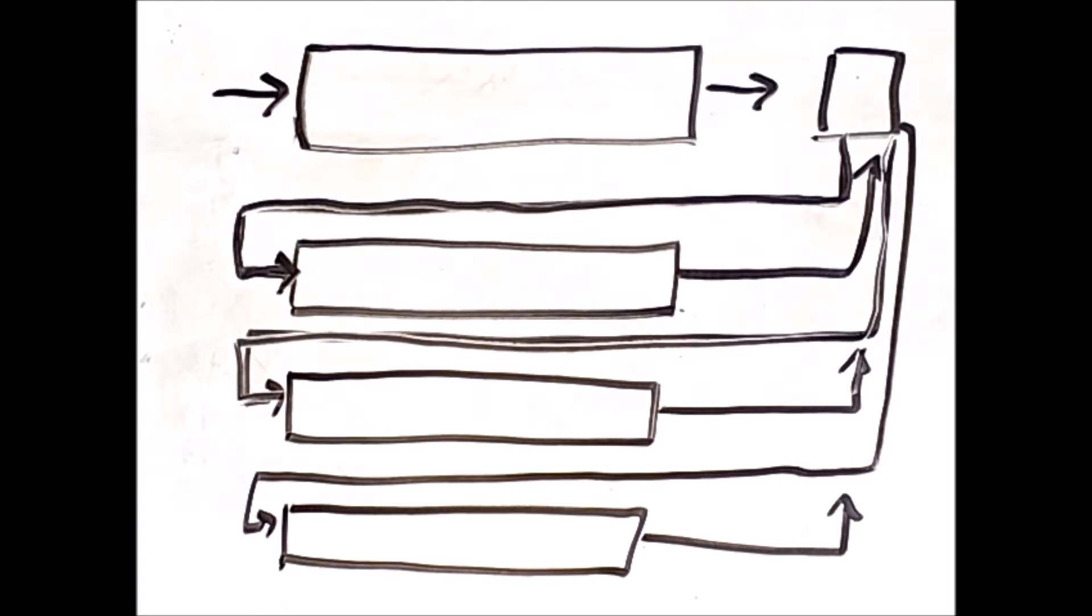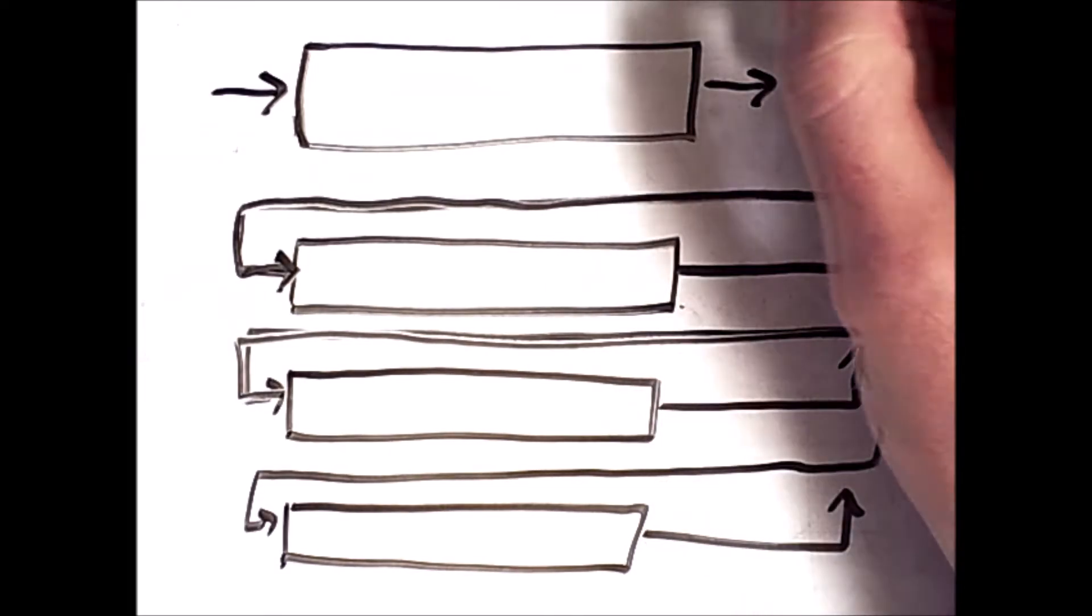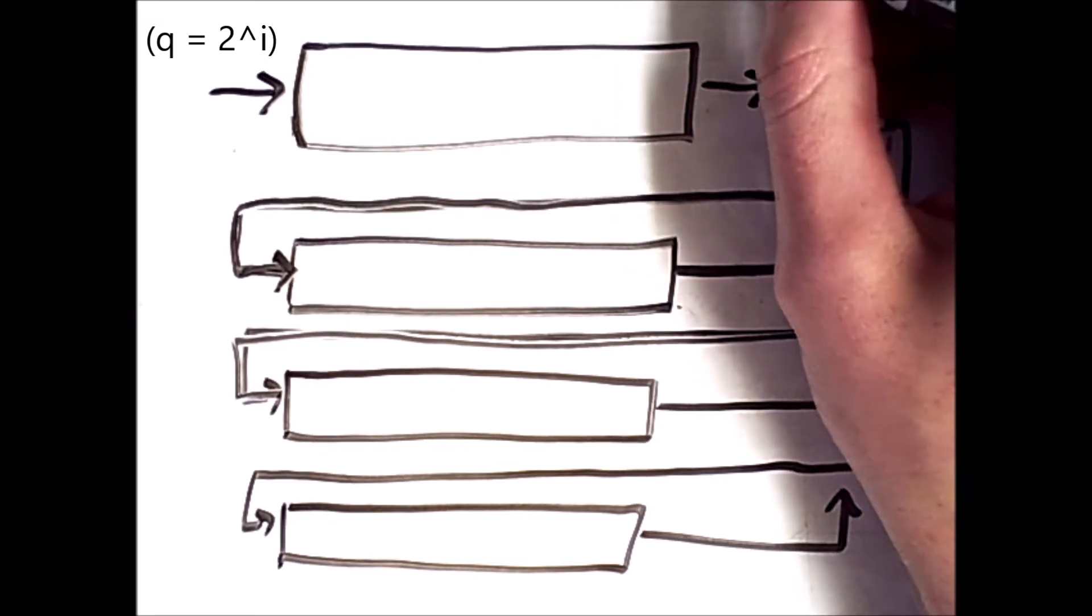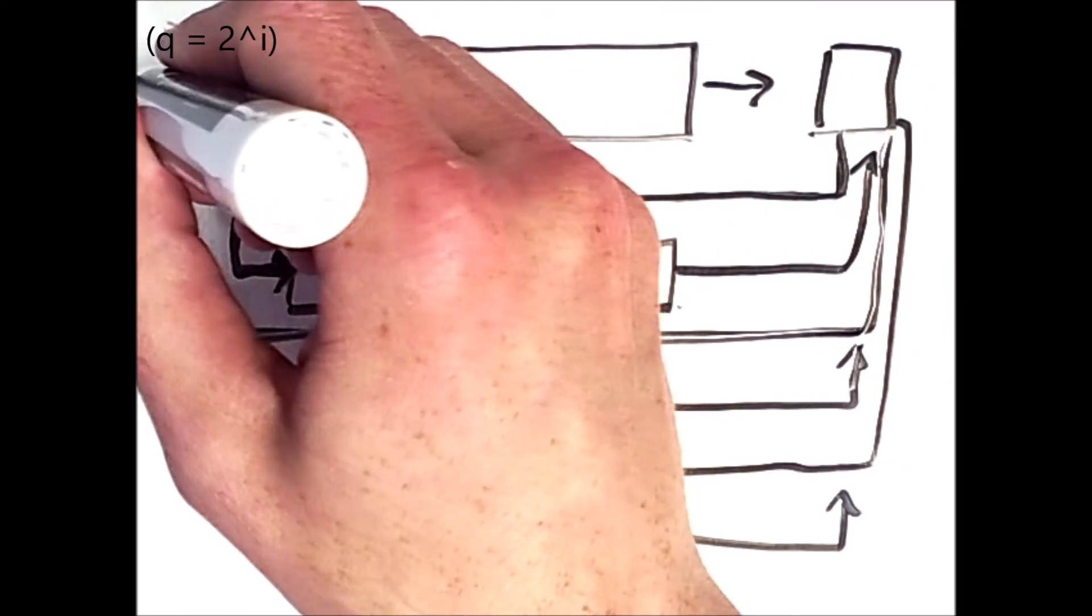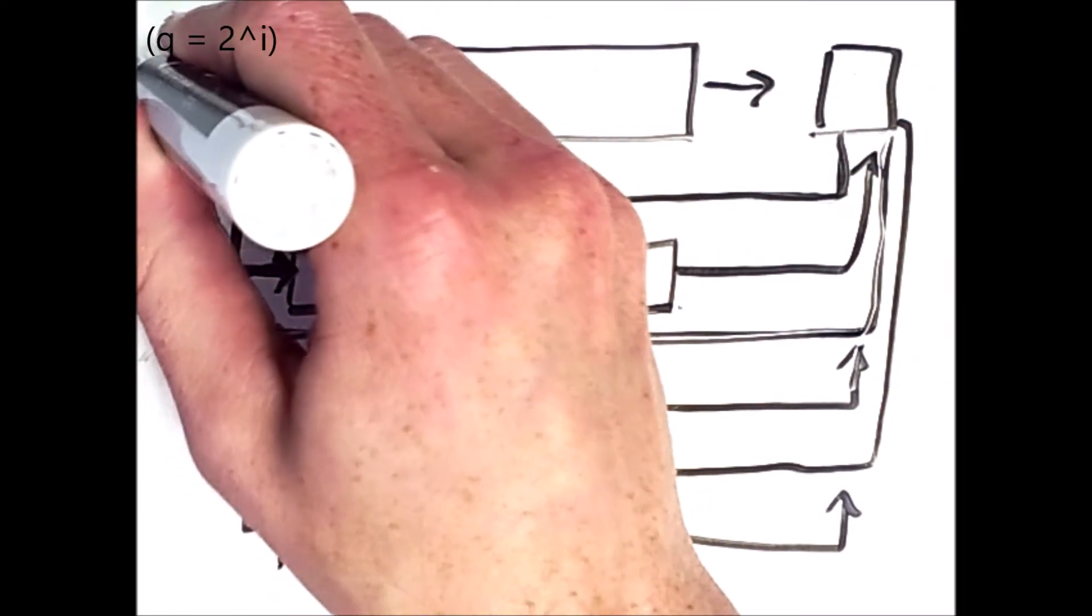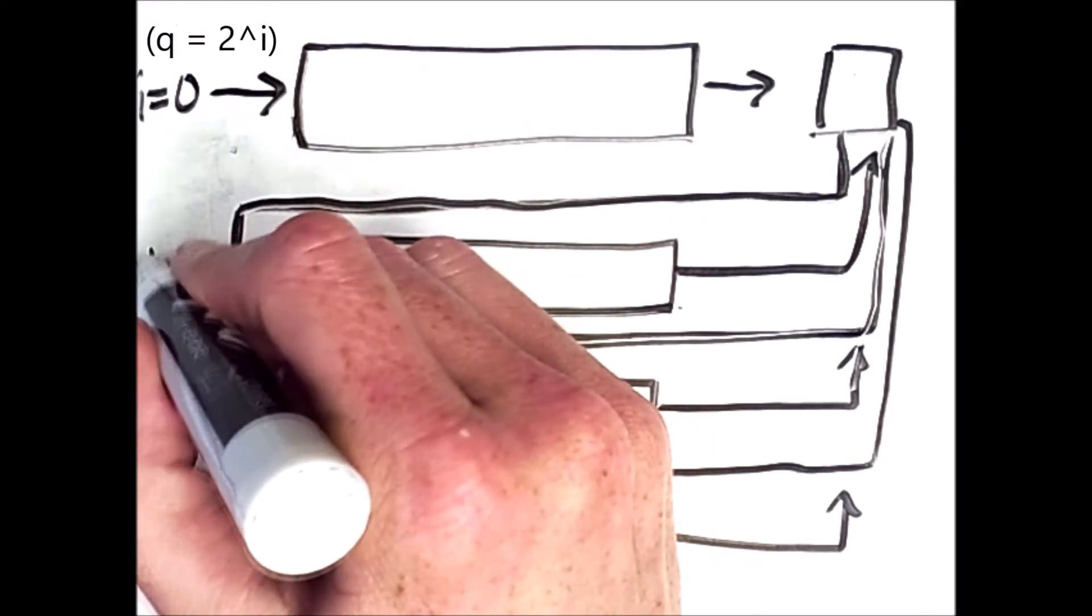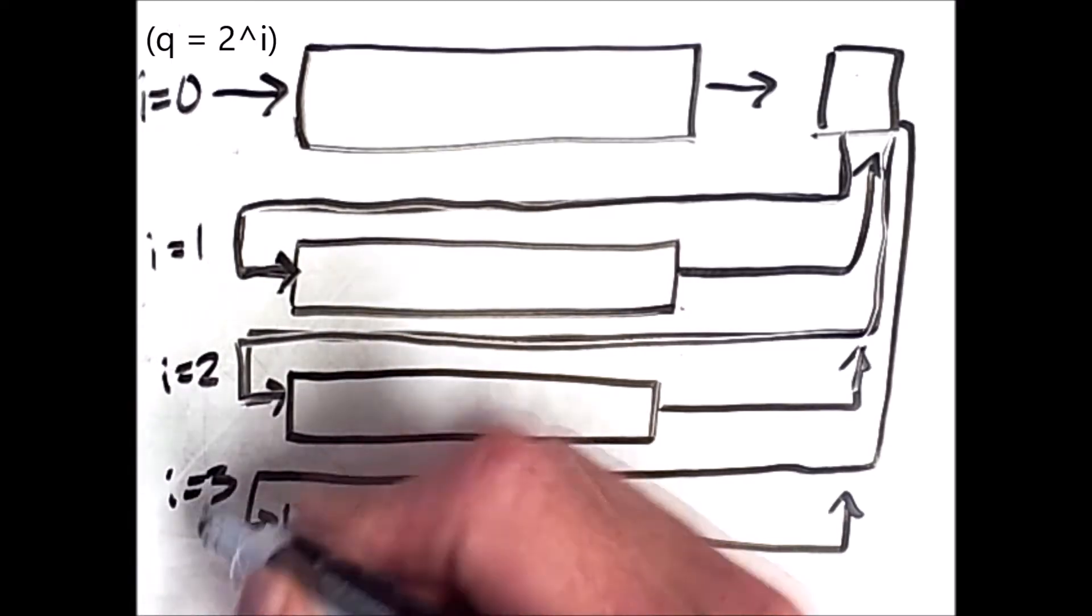Now, there are some issues with starvation here, especially if you have a small time quantum. So there is also a version of feedback in which the time quantum scales depending on which of these queues you're in. And so in this scheme, the first queue would have an i of 0, and then this one would have an i of 1, an i of 2, an i of 3, and so on.